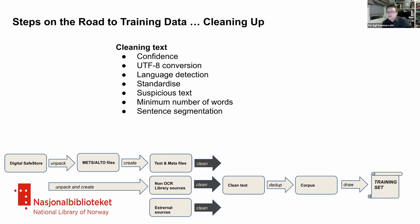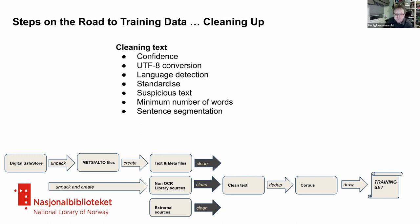Then we go through a cleaning process. Apart from looking at the confidence of the articles and paragraphs, we do Unicode conversion of everything. We do language detection to see if there are other languages we don't want. We do quite a lot of standardization, like handling accented characters and doing computations in a standardized way. We also look at suspicious text — typically non-alpha characters at the beginning of paragraphs. Since we have quite a lot of text, we basically throw out anything we find suspicious. We also look at a minimum number of words in an article or paragraph, and at the end we segment sentences.